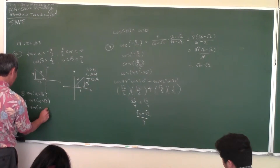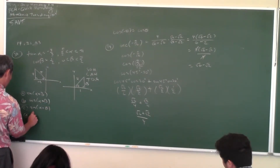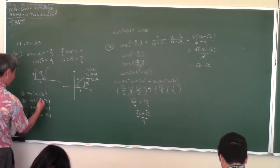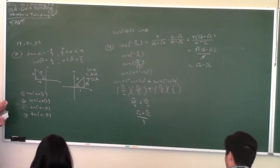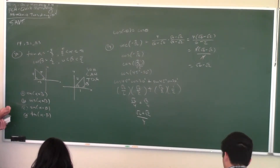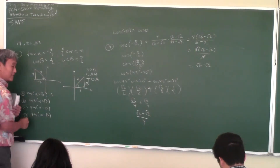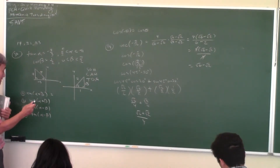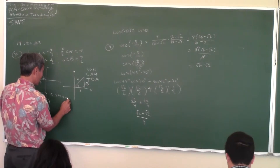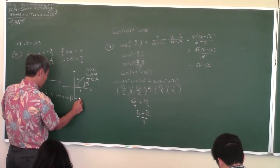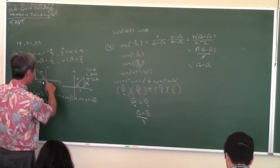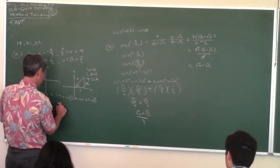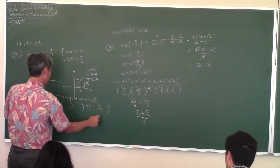Let's do A and D. A is sine of (α + β). What's the identity — you've got to have it memorized. Sine of (α + β) equals sine of the first times cosine of the second, plus cosine of the first times sine of the second. Then all you do is fill in the values by looking at those triangles.